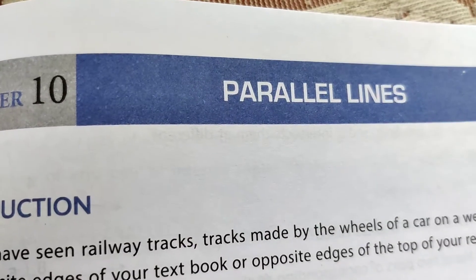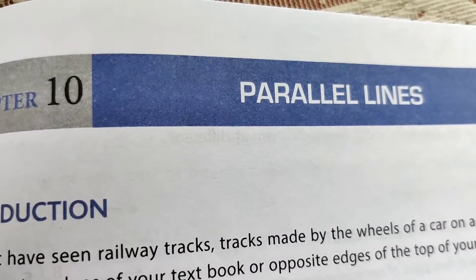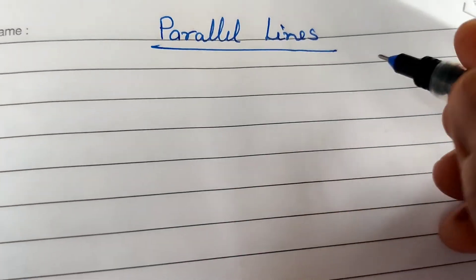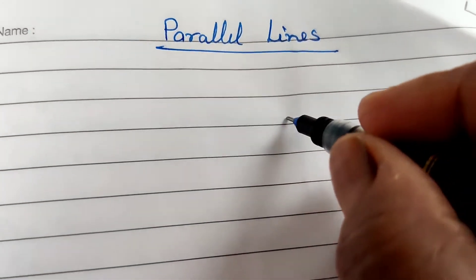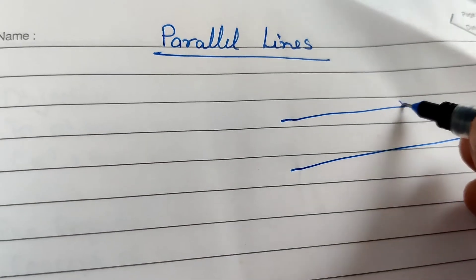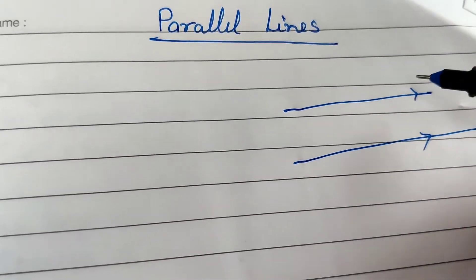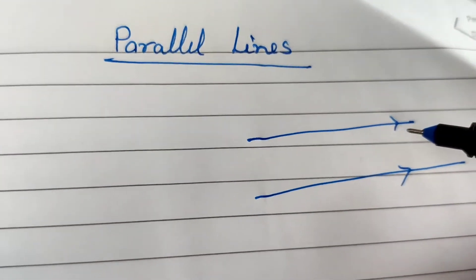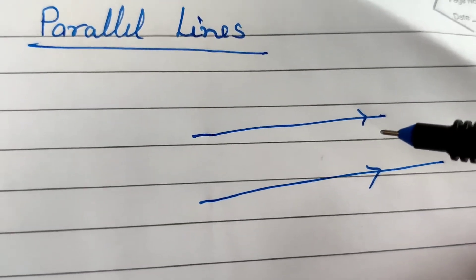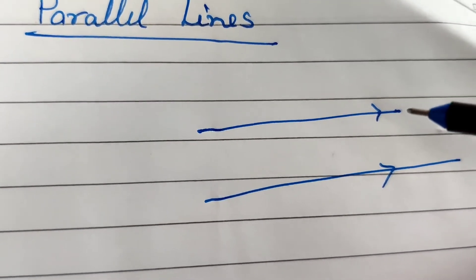Chapter: Parallel Lines, Class 8. Two lines in a plane are said to be parallel if their corresponding angles are equal, alternate angles are equal, and the sum of the co-interior angles is equal to 180 degrees.